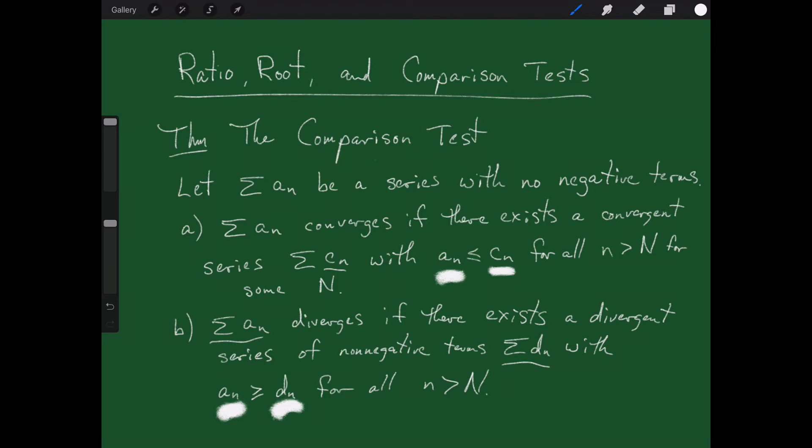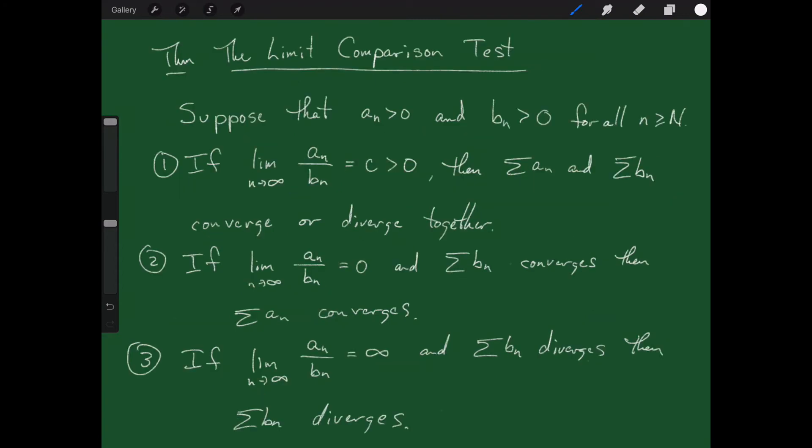So that's the comparison test — you'll get to see an example of it later. The next test is called the limit comparison test, and it's a lot more powerful than the comparison test because you don't actually have to show a greater-than or less-than relationship between the two sequences. You just choose one sequence that seems like it could converge or diverge like the other sequence and use that as a comparison.